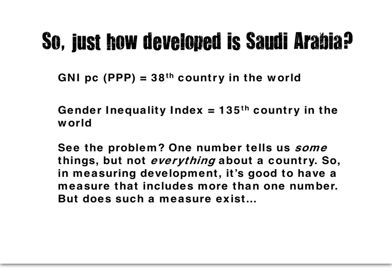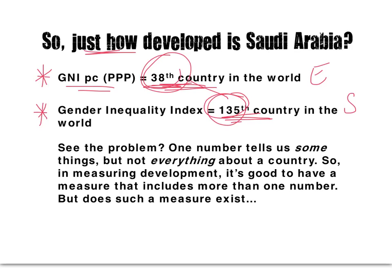So we pose the question: just how developed is Saudi Arabia? When we look at economic terms — the GNI per capita, purchasing power — Saudi Arabia comes in at a very impressive 38th in the entire world, one of the most economically developed of the LEDCs. But when you look at the social measures of development, like the Gender Inequality Index, it comes in at 135th — from 38th to 135th depending on whether you look at economic or this particular aspect of social development. One number tells us some things, but not everything about a country. So when you're measuring development, which covers a whole range of social and economic things, it's good to have a measure that includes more than one number.